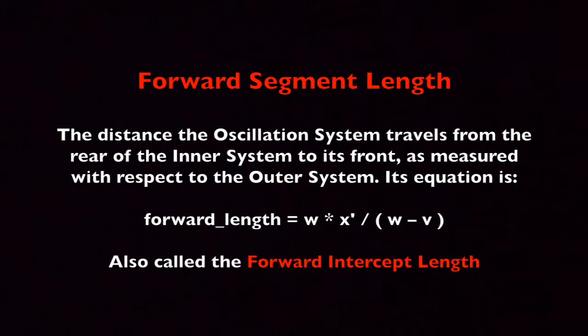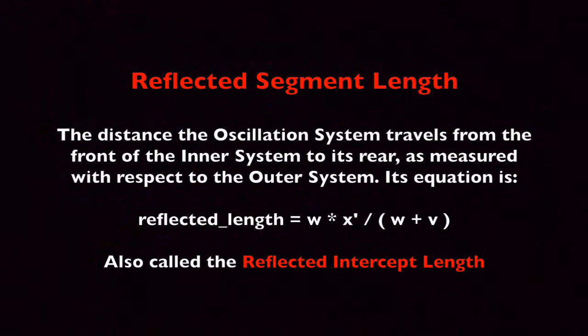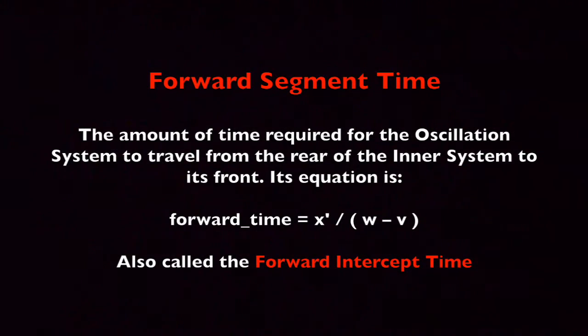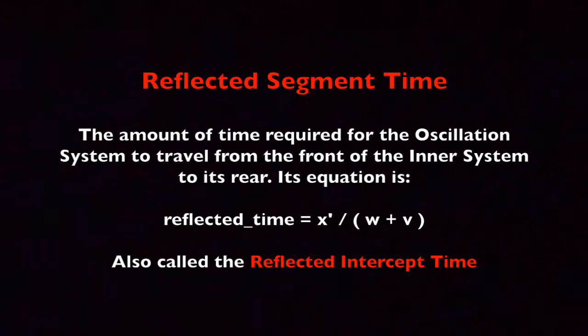The length that the man walks from left to right is called the forward segment length. The length he walks from right to left is the reflected segment length. We can also find the amount of time it takes for the man to travel each of these lengths. These times are called the forward segment time and the reflected segment time, respectively.